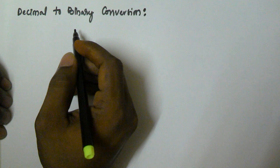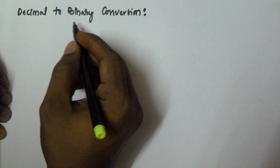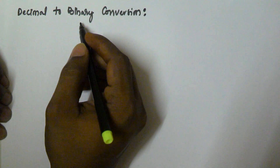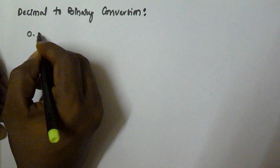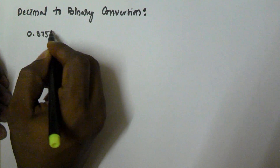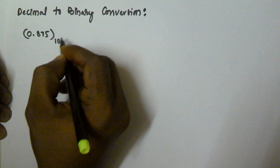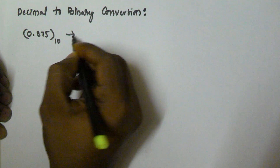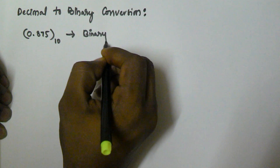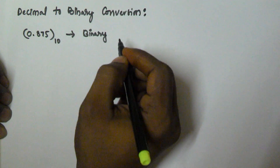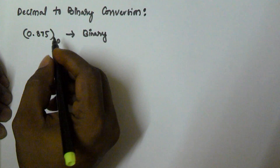Hello friends. In this video I will show you how to convert a decimal number to binary. Let us take a value 0.875, which is in decimal, and we have to convert this number into binary.